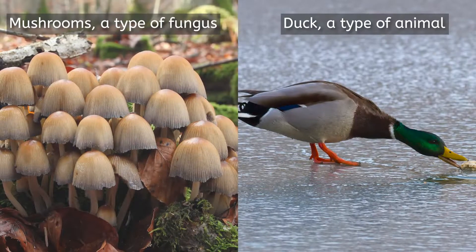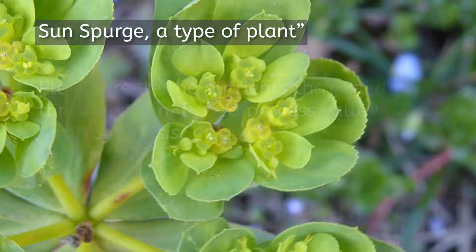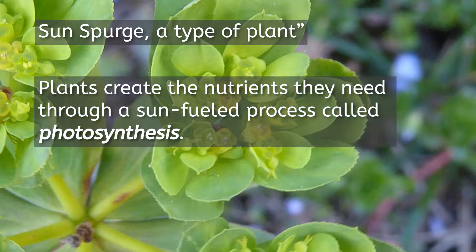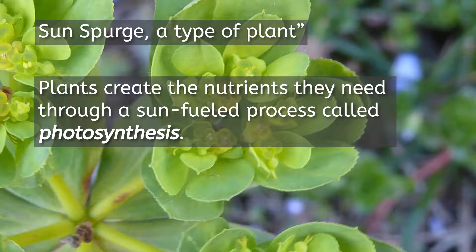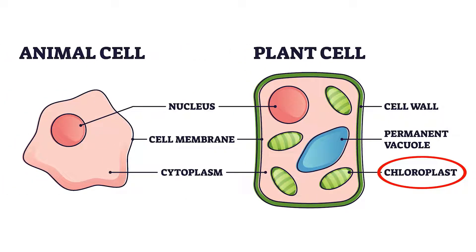Both fungi and animals take in nutrients by eating, in different ways. Plants, on the other hand, create the nutrients they need through a sun-fueled process called photosynthesis. In a future lesson we'll dive deeper into photosynthesis, but for now we'll consider the membrane-bound organelle in plant cells that allows them to photosynthesize: chloroplasts. Animal and fungal cells don't contain chloroplasts because they don't need them.